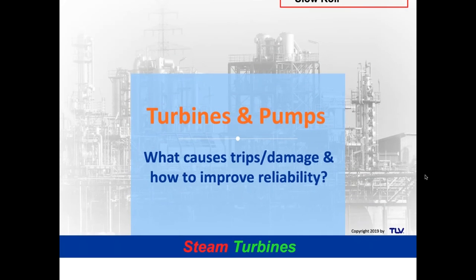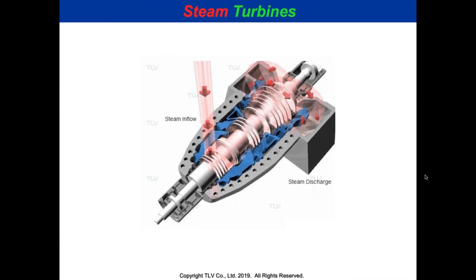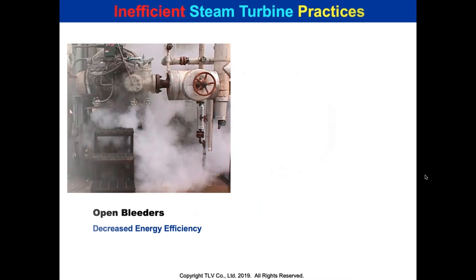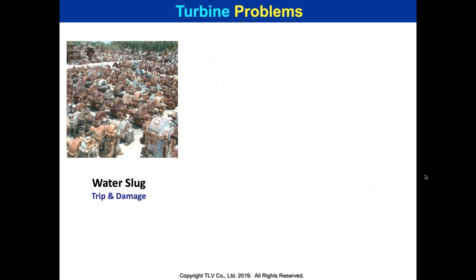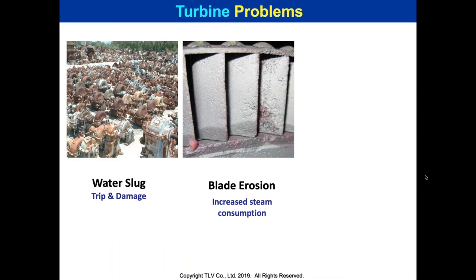Let's talk about turbines and pumps — what causes trips, damage, open bleeders, and slow rolling. Turbine blade erosion is not caused by steam — it comes from condensate carrying particles. If that condensate had been removed ahead of time through both a condensate discharge location and a separation system to disentrain moisture from wet steam, you wouldn't see that erosion.